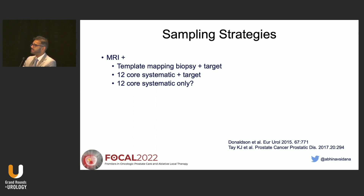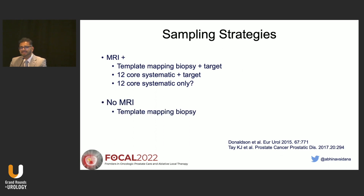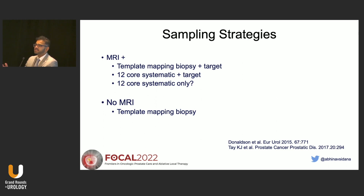Sampling can be done either by a 12-core systematic biopsy plus a targeted biopsy, or a template mapping biopsy plus a targeted biopsy. Template mapping biopsy samples every 5 mm of the prostate, yielding 45 to 60 cores, and has been shown to have 95% accuracy in detecting and localizing clinically significant cancer. In certain situations, if a patient had a 12-core systematic biopsy and MRI was obtained after it, and the findings correlate and are on the same side, focal therapy can potentially be offered without repeating a targeted biopsy.